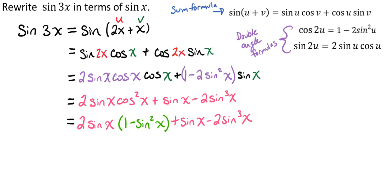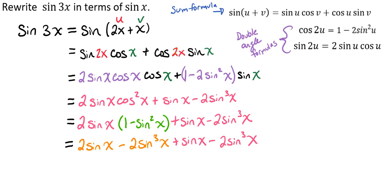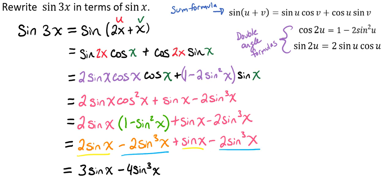Now we're going to distribute 2 times the sine of x into 1 minus sine squared of x, which gives us 2 times the sine of x minus 2 times the sine cubed of x, plus the sine of x minus 2 times the sine cubed of x. Combining like terms gives us 3 times the sine of x minus 4 times the sine cubed of x. And we're done.